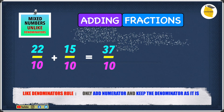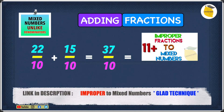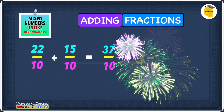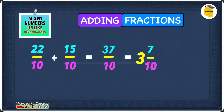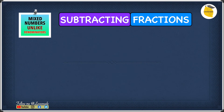For the denominator, because they're like fractions, we leave it as it is — so it's 10. We now have 37 over 10. It's fine to leave it as 37 over 10, but teachers and exams require you to convert it into a mixed number, and that's exactly what we're going to do. 37 over 10 as a mixed number is 3 7/10, so our answer to this question is 3 7/10.